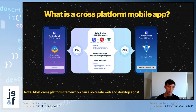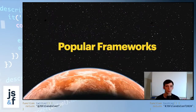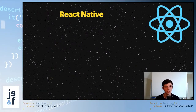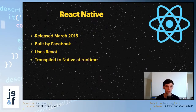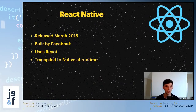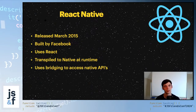Most cross-platform frameworks can also create desktop or web apps as well. Let's talk about some popular frameworks. React Native — obviously this is a huge one lately. It was released in March of 2015, built by Facebook, uses React. It transpiles its code to native at runtime, so it's not compiled — it uses a bridge to convert its native APIs from your JavaScript or React code.